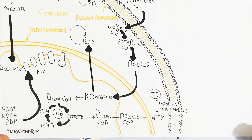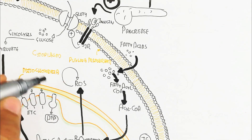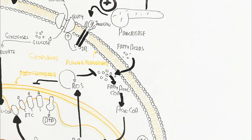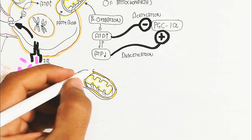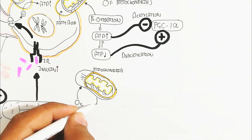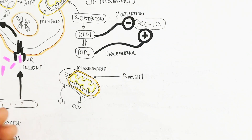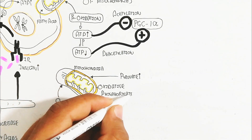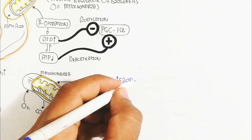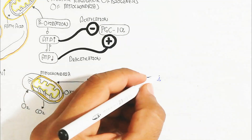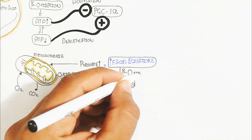The Krebs cycle produces NADH and FADH2, which are used by the electron transport chain to produce more ATP. The elevation of ATP inhibits PGC-1α, reducing mitochondrial biogenesis. Oxidative phosphorylation uses oxygen and releases carbon dioxide to produce ATP. Increased pyruvate from glycolysis and elevated fatty acids due to hyperglycemia lead to production of more reactive oxygen species via beta-oxidation.